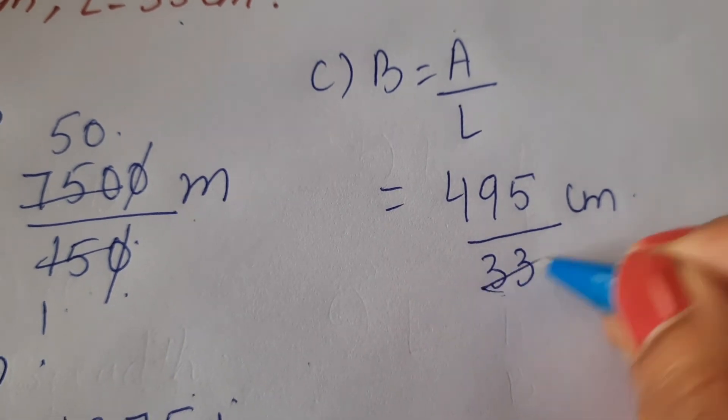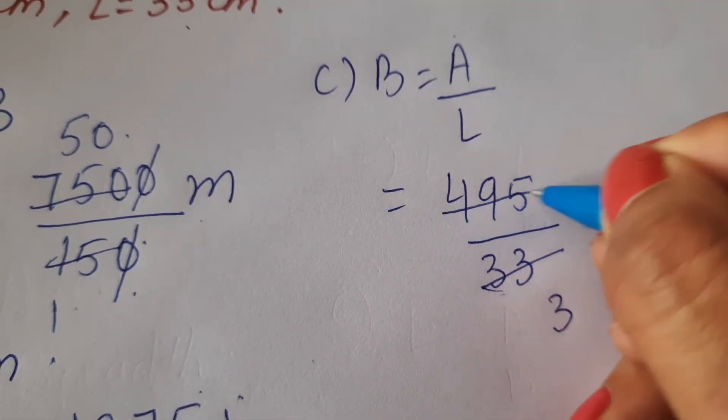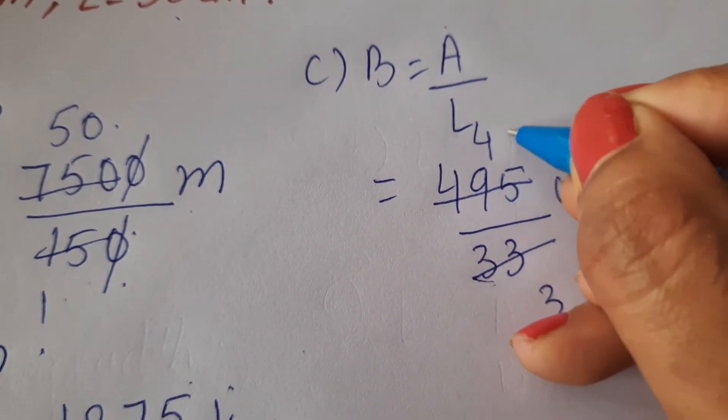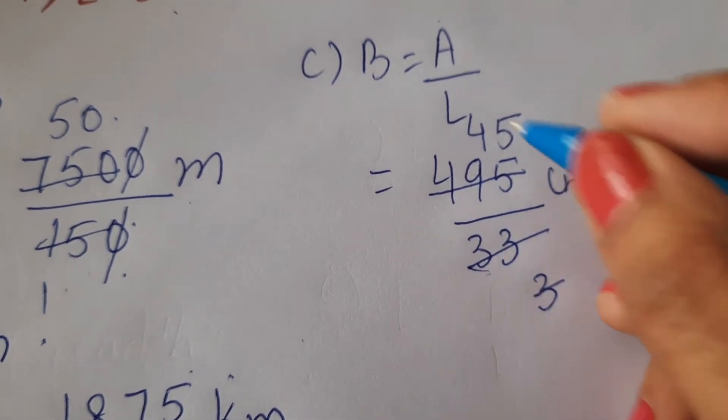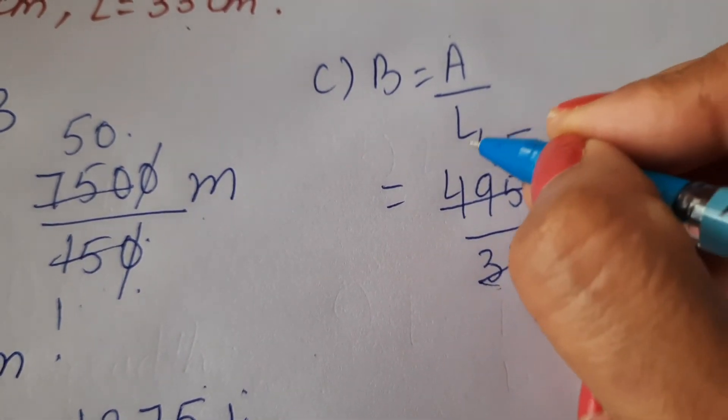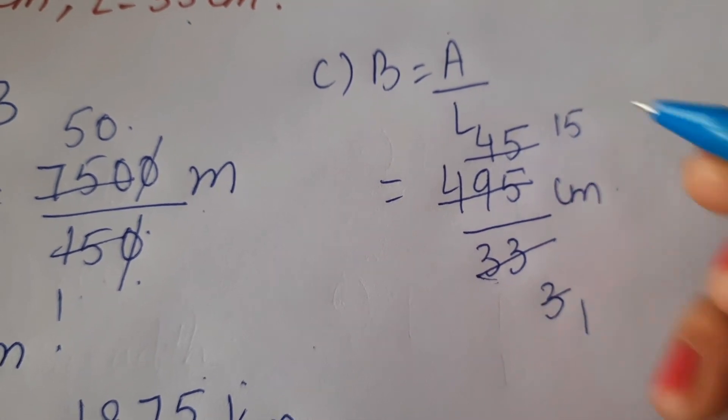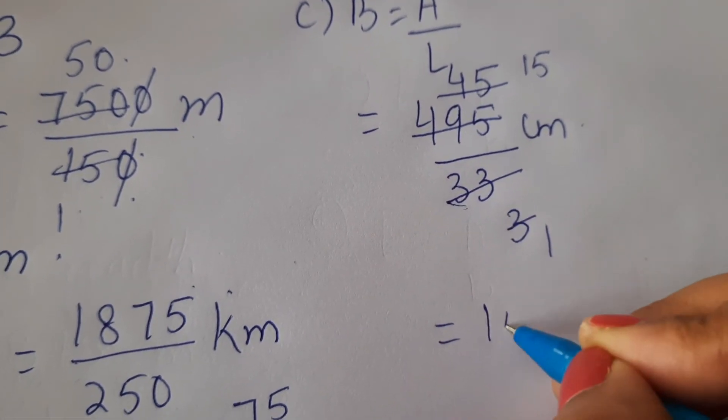11 threes are 33. 11 fours are 44. 11 fives are 55. Now 3 is again divisible by 3. 3 ones are 3. 3 fives are 15. So it will be 15 centimeters.